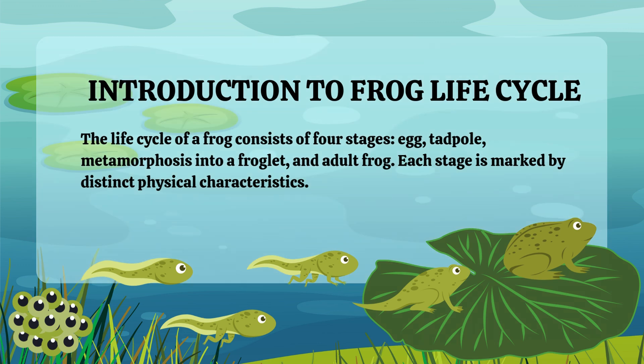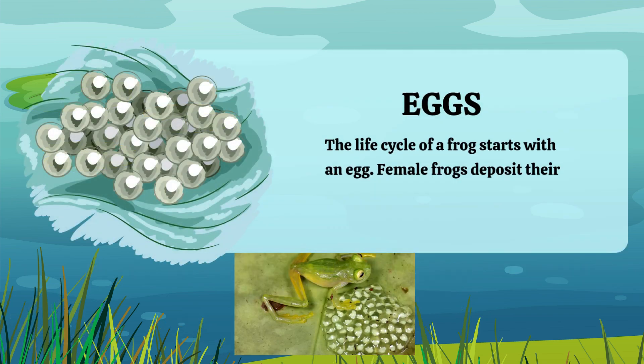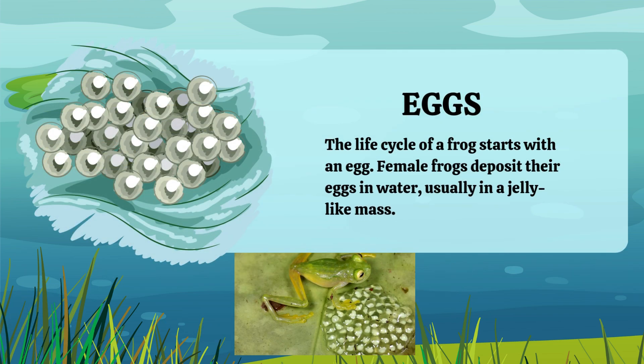The life cycle begins with the egg stage. Female frogs deposit their eggs in water, typically in a jelly-like mass known as spawn. This protective layer helps safeguard the eggs from predators and environmental factors.